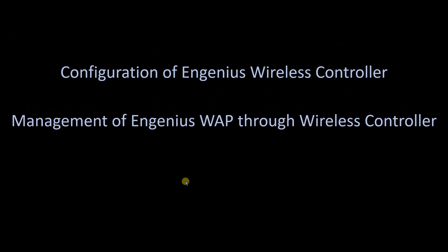That was all about the overview and understanding how the access point is connected to your wireless LAN controller. In the coming part two of this tutorial, we will look at the configuration of NGINIUS wireless controller and how you can manage your wireless access points through it, and we will be completing the entire administration part. Thanks for watching. If you haven't subscribed to my YouTube channel, please subscribe now and do share it with your friends. See you in the next tutorial.